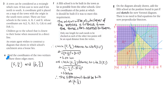Now we're looking at part E: find the coordinates of the two vertices where three edges meet. The first is (5, 11/2) — that point there, 5 and 5.5 — and the other is (6, 7/2), which is 6 and 3.5, right here.